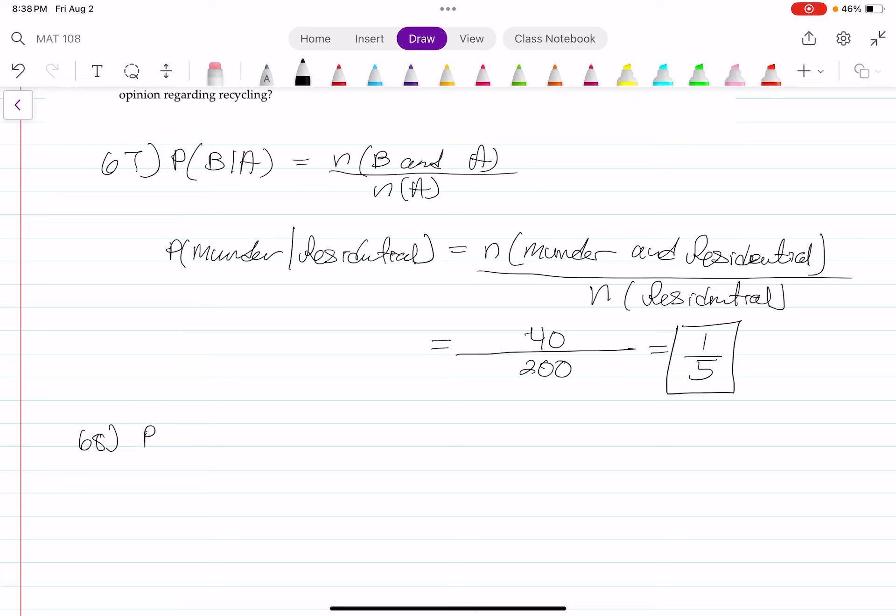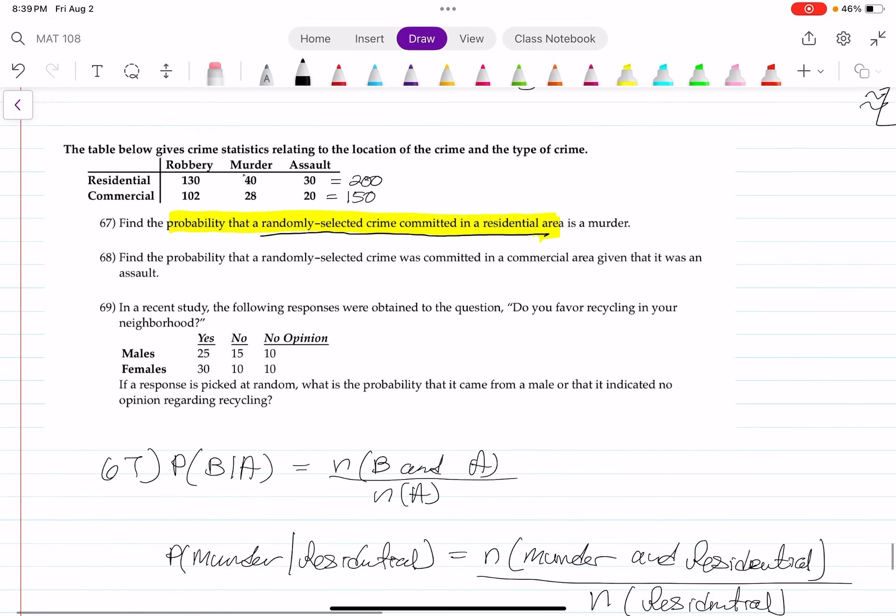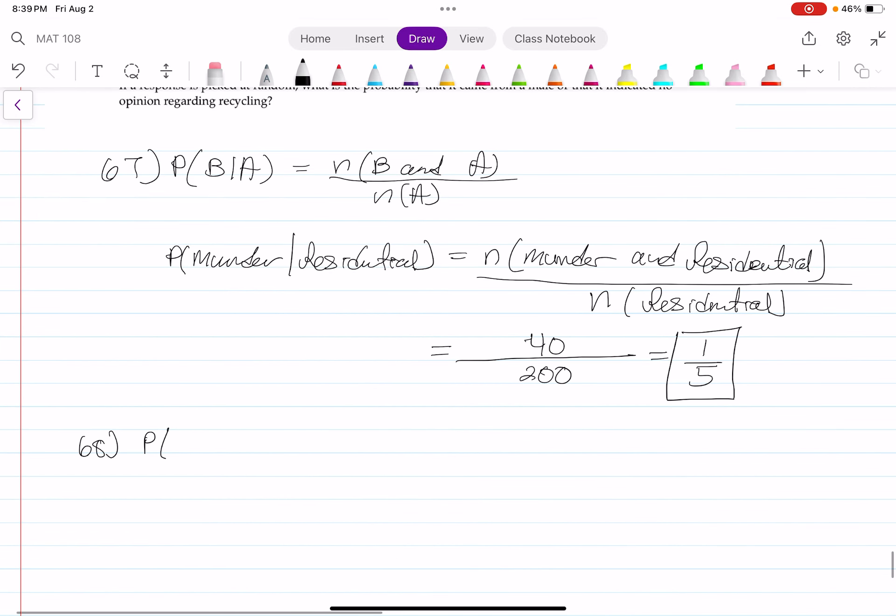So it's going to be the probability of commercial—I'm going to use comm for commercial, I don't want to write too much—given assault. Equals to the number of crimes that are commercial and assault. And that's going to be divided by the number of assaults.